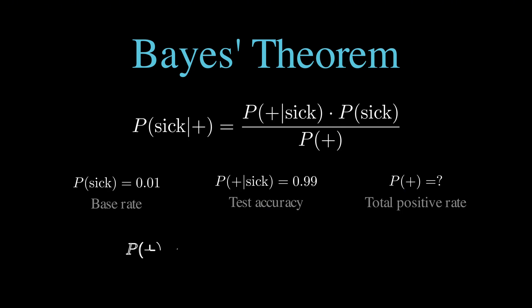You could be sick and test positive, which happens with probability 0.01 times 0.99, giving us 0.0099. Or you could be healthy and test positive, which happens with probability 0.99 times 0.01, also giving us 0.0099. Adding this together, we get 0.0198 as our total probability of testing positive.